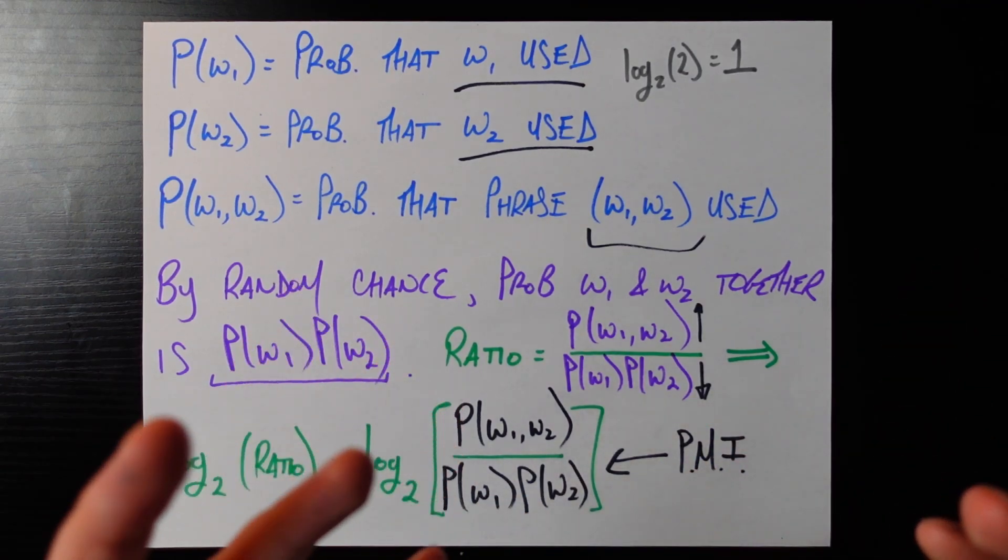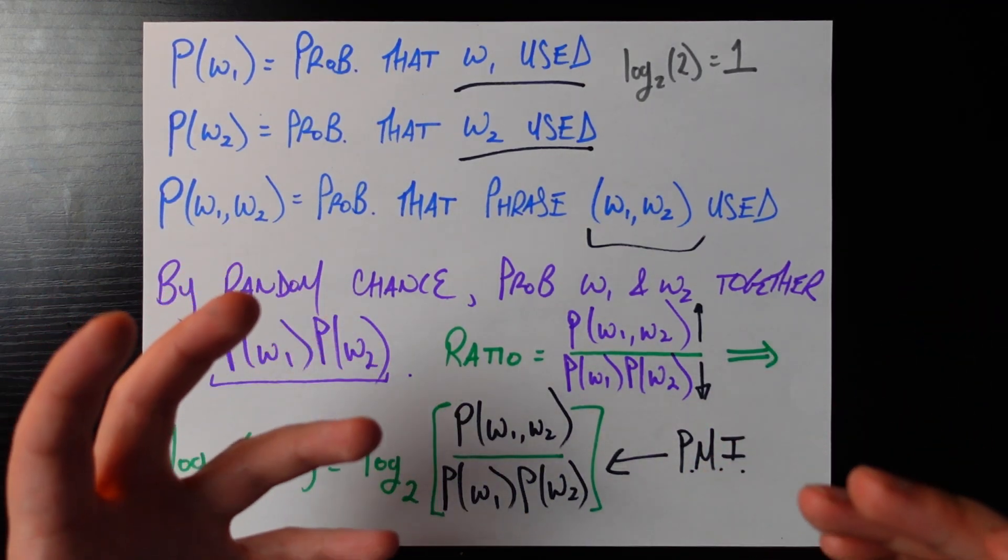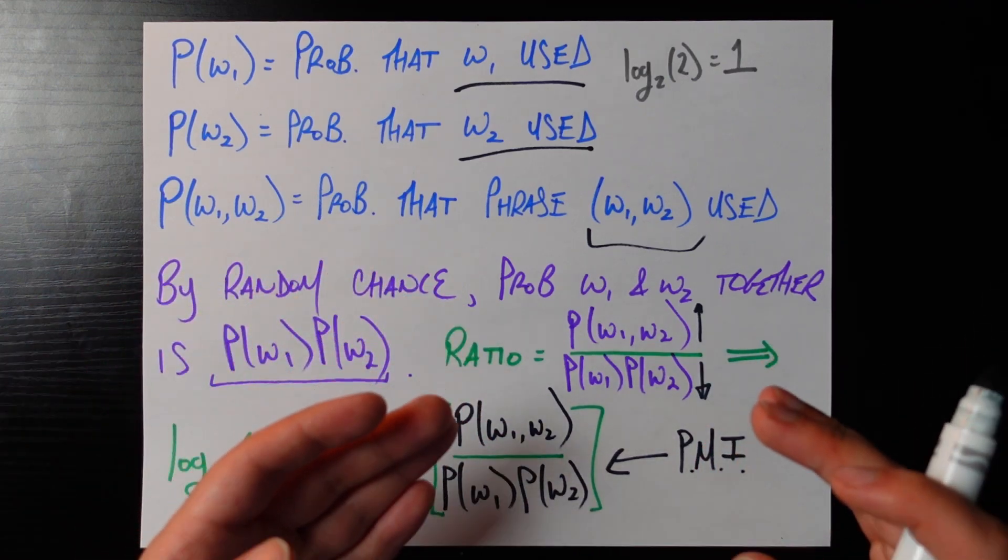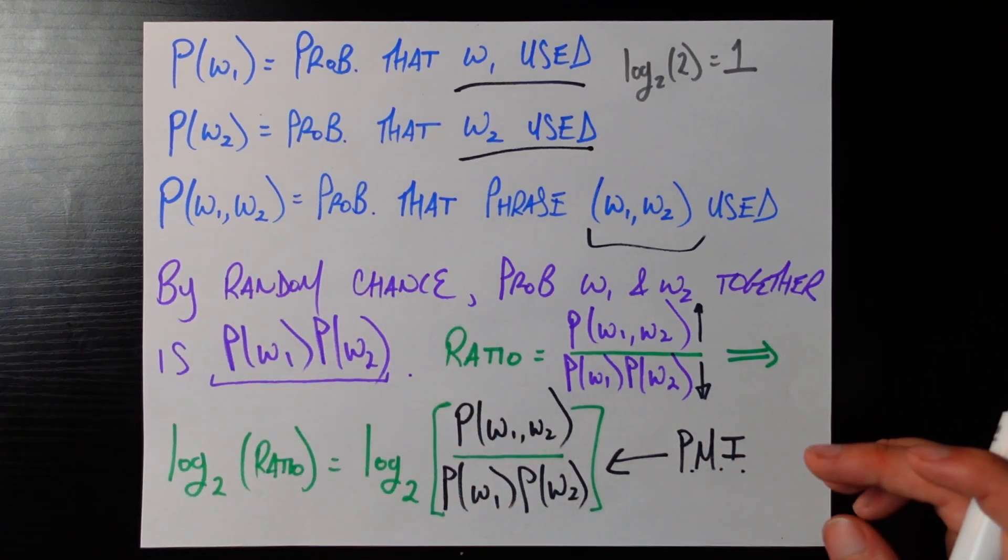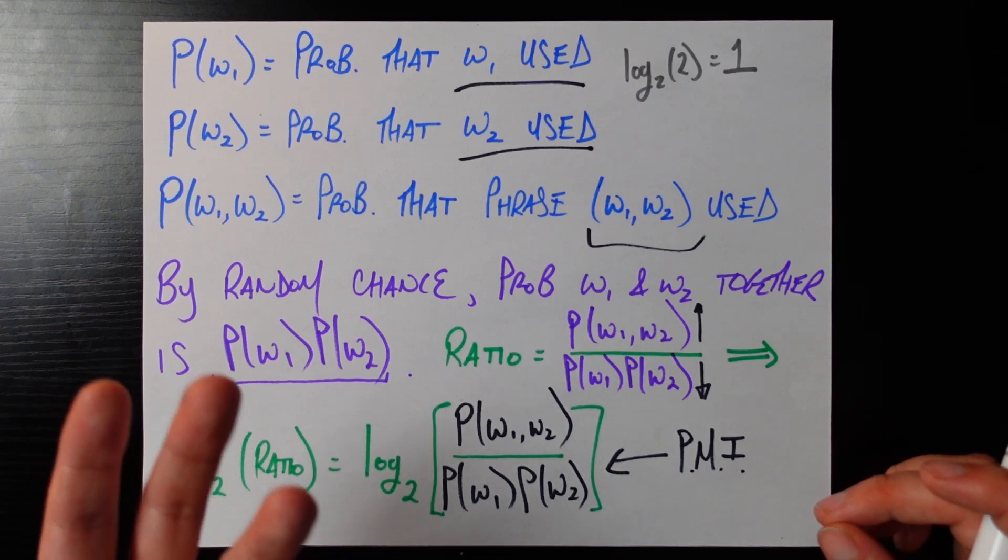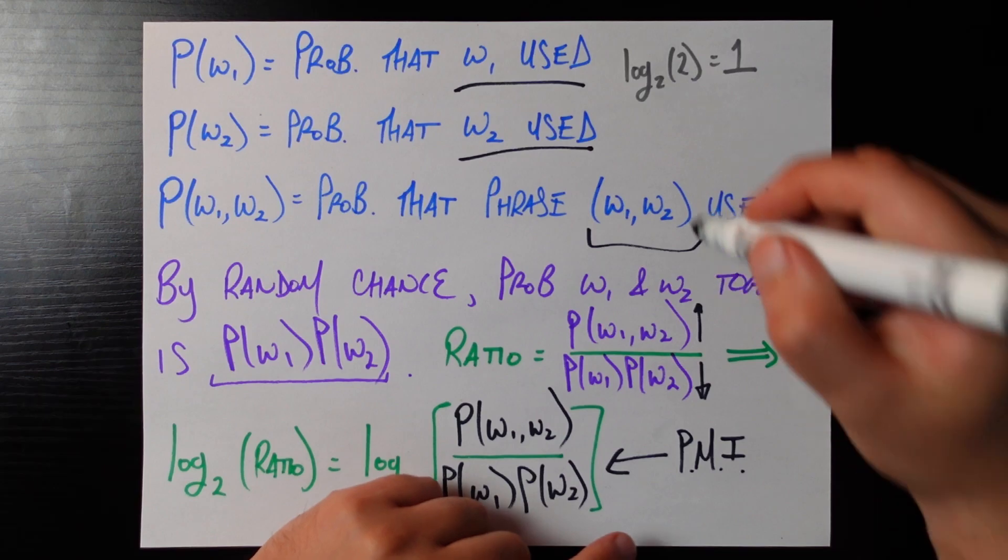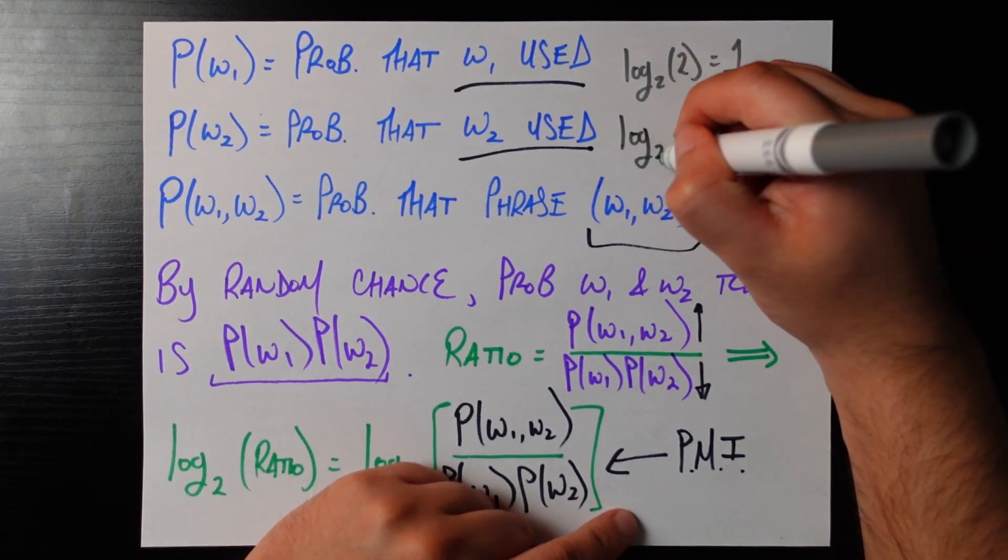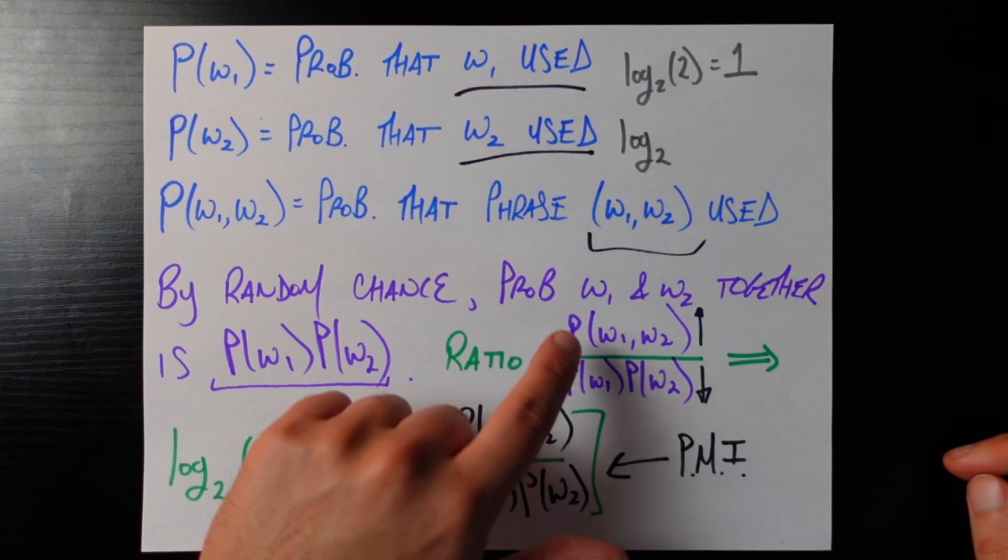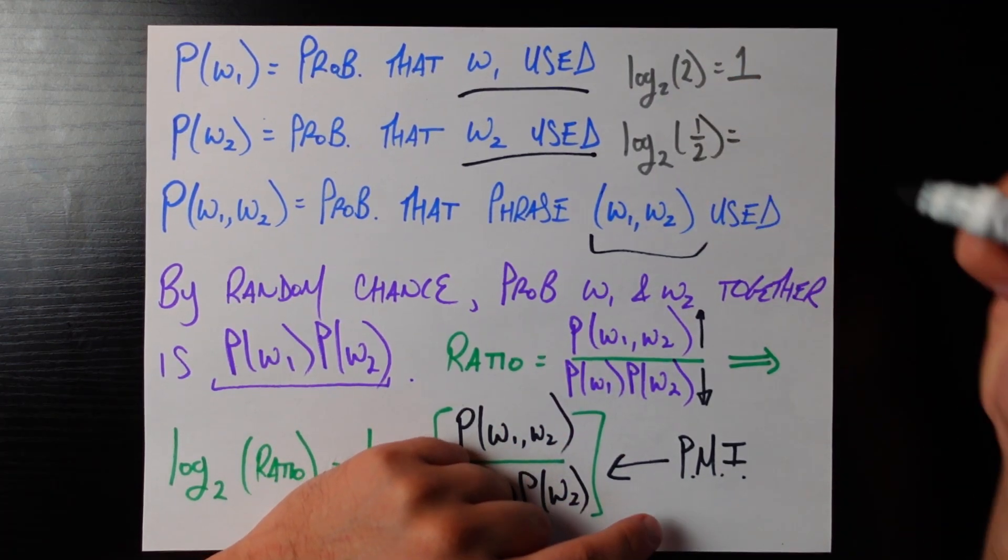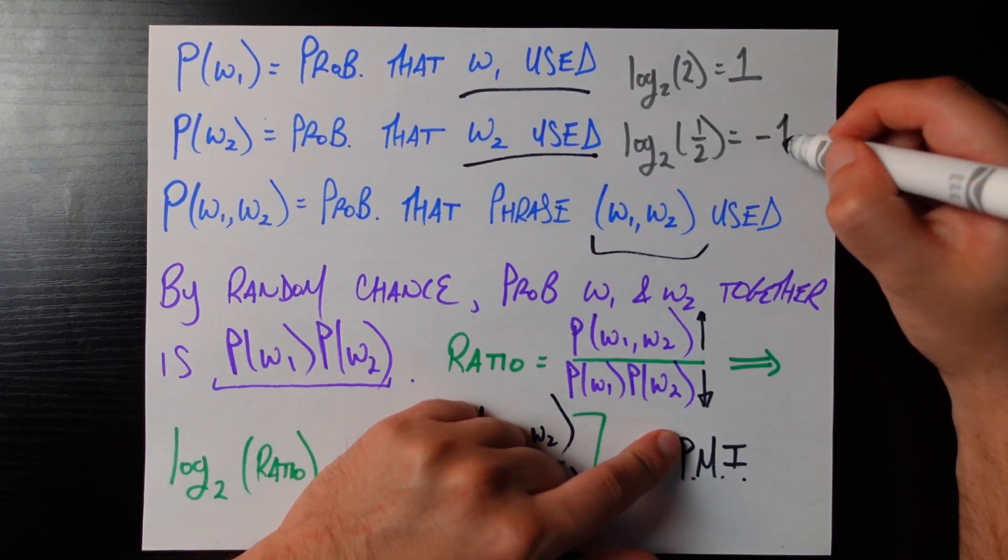On the other hand what's the opposite case of that? What's the opposite case of us getting that this is happening two times more than by random chance alone? Well the opposite of that would be that it's happening half as probable as by random chance alone and if it's happening half as probable as by random chance alone then the numerator would be half of the denominator so our ratio would be one half and log base two of a half is equal to negative one.